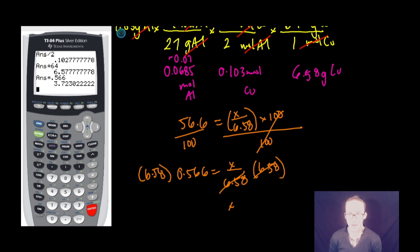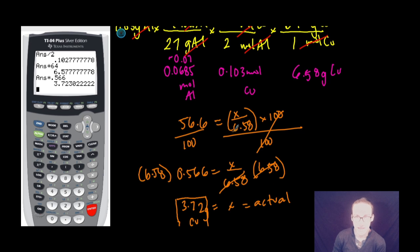I multiply each side by 6.58 to determine my value for x. And we end up with 3.72 grams of copper as my actual yield. This is my actual yield. This is what I actually got. I expected theoretically 6.58 grams, but I should only make about 50-ish, 60% of that.